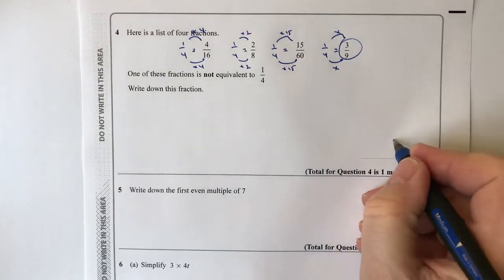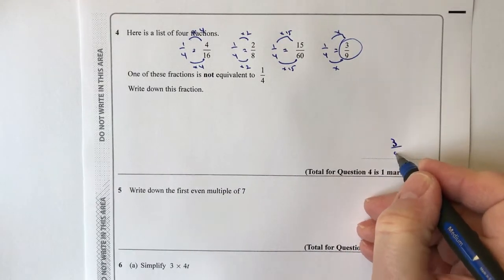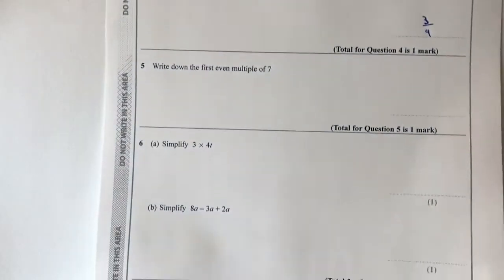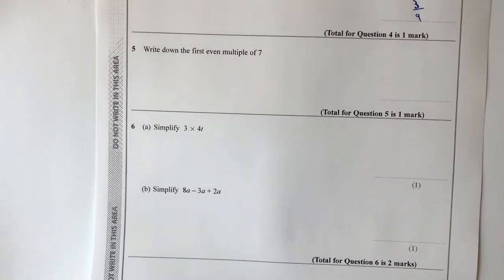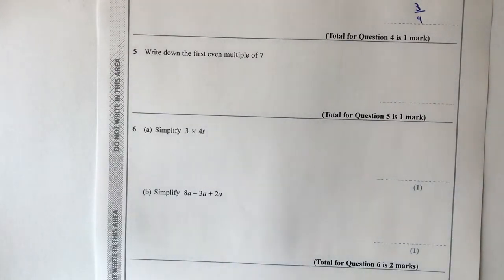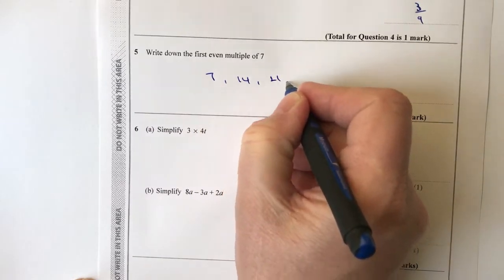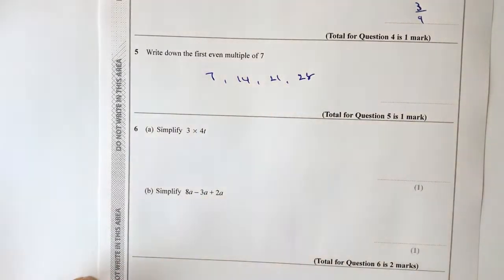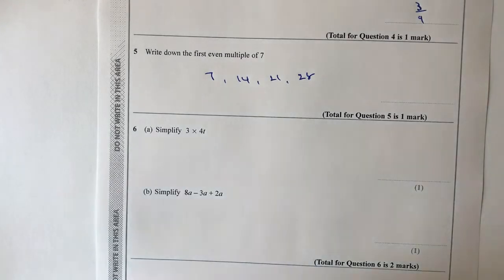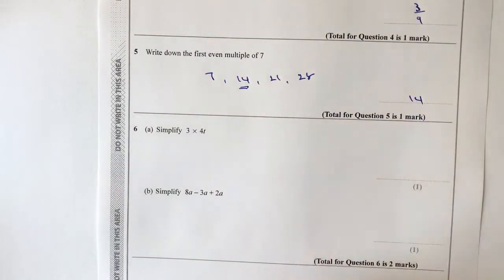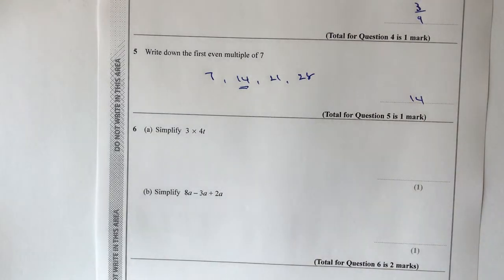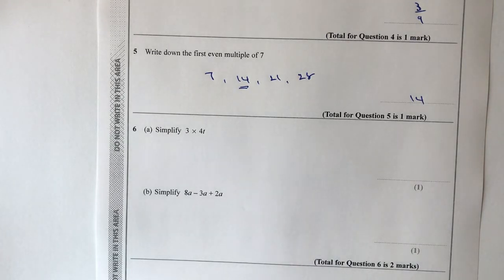Question five asks for the first even multiple of 7. Writing out the multiples: 7, 14, 21, 28 and so on. The first even multiple is 14.